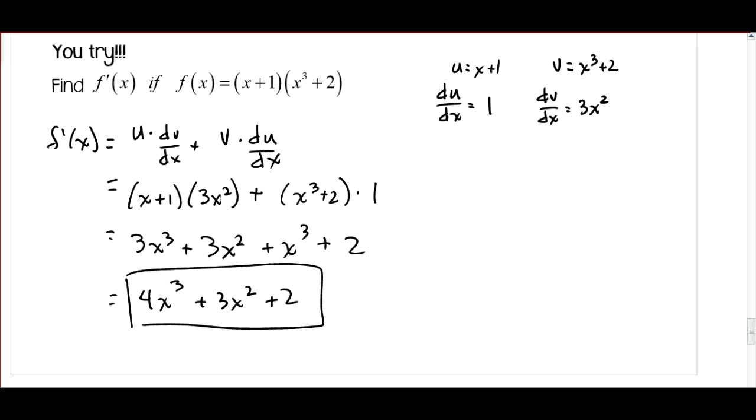All right, so here's the solution to the you try. So here's my function u, which is x plus 1, so the derivative is just going to be 1. And here's my function v, so the derivative of that is going to be 3x squared. So here's my product rule. I've got u times dv/dx plus v times du/dx, and then substituting all my pieces from here, and then doing a little simplifying, and hopefully you've got 4x cubed plus 3x squared plus 2.